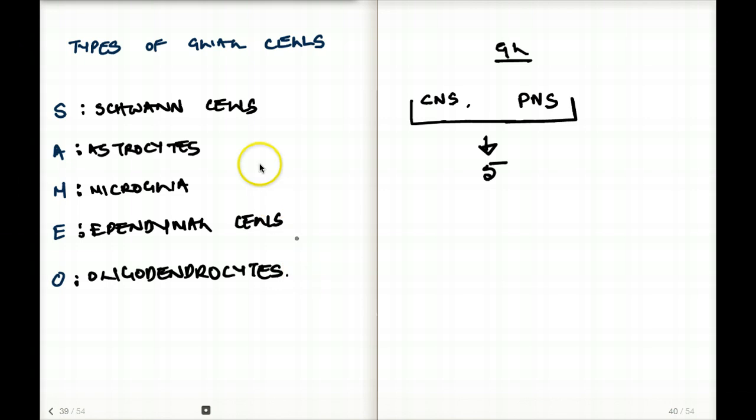Now, oligodendrocytes and Schwann cells, these two make myelin. The only difference is one makes myelin in the central nervous system, the other makes myelin in the peripheral nervous system. Can you guess which one? That's right. Schwann cells make myelin in the peripheral nervous system, and oligodendrocytes make myelin in the central nervous system.